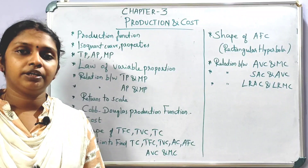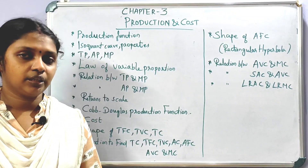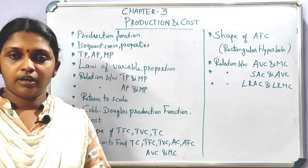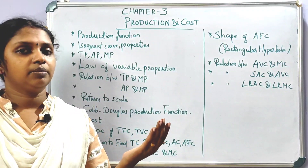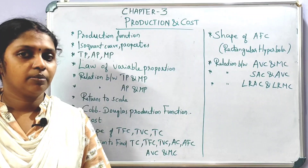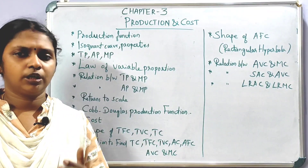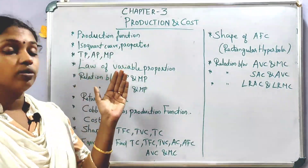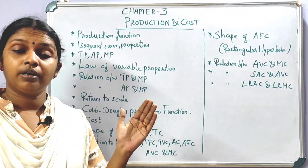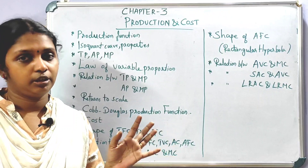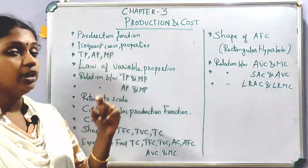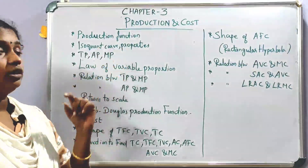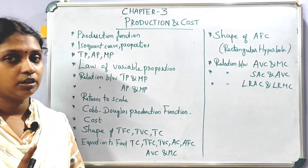In the second chapter we learn the Indifference Curve and its Properties. We will also learn the Isoquant and its Properties, because whether for consumer or producer, the shape and properties are similar. Then there are Total Product, Average Product, and Marginal Product.